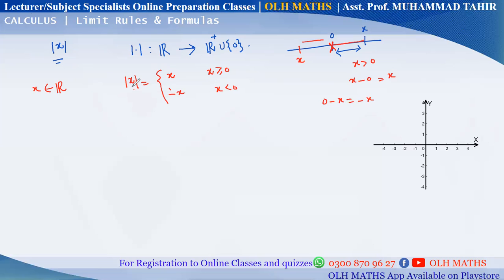जब absolute value function किसी भी number पर apply होगा — अगर वो number zero या greater than zero है, तो absolute value of x will be simply x. Mod हटा देना है और x से replace कर देना है। यह x mod is equal to x, if x is greater than or equal to zero. अगर x negative है, तो absolute value of x निकालने पर by default वहाँ पर एक negative sign रखते हैं।